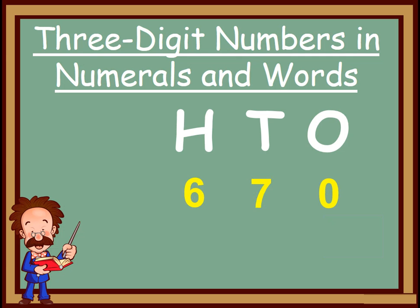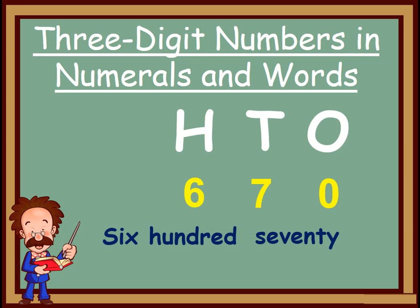Here is another number. This is our 3 digit number and you have to write it in words. Can you write? Do you know how we read this number? Yes, 670. As I told you, we write as we read. So 670, we will write like this: 670.